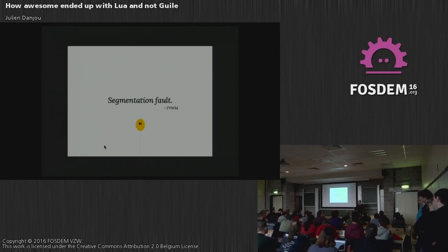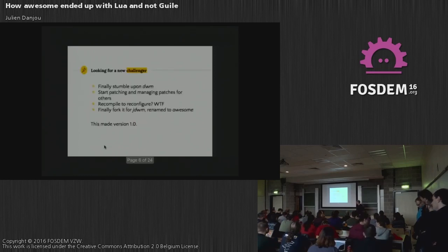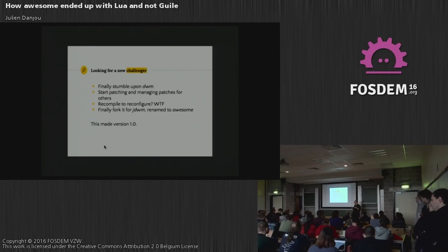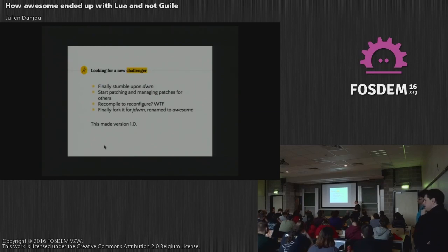It's always like, once a year, 'oh, I'm going to try this one, maybe it's better,' and it's never-ending. But at the end, I started on DWM, which is a very small window manager, essentially tiling — it organizes your windows for you. I started to patch it because it has a very low set of features, and you have to recompile to do anything. It's just like 2,000 lines of C code, and you have to recompile it if you want to change anything in DWM.